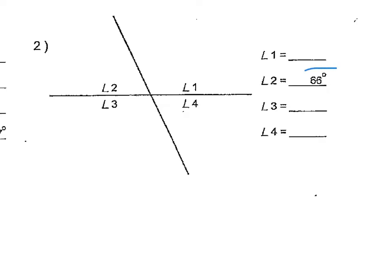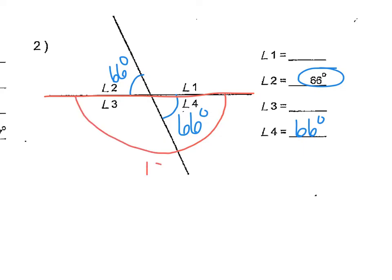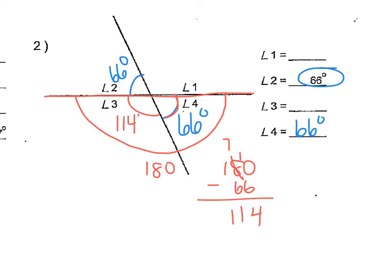In this problem, angle 2 is 66 degrees. Angle 4 is opposite of it — it's vertical to it — which means angle 4 must also be 66 degrees. Looking at this straight line, that means this angle and that angle together make 180 degrees. So 180 minus 66 tells us angle 3 is 114 degrees. And since angle 3 is vertical to angle 1, angle 1 is also 114 degrees.